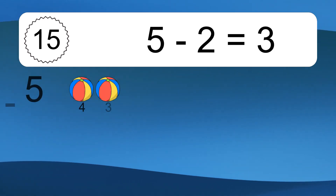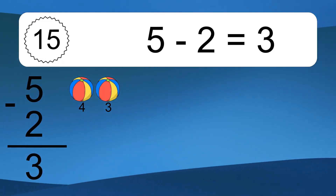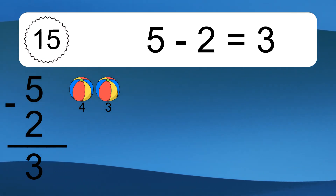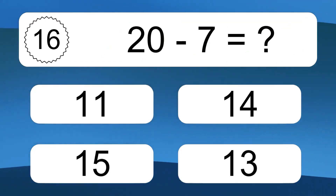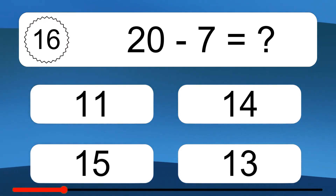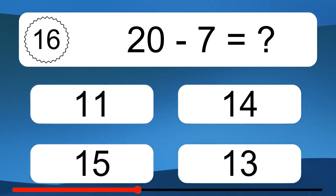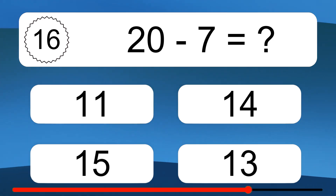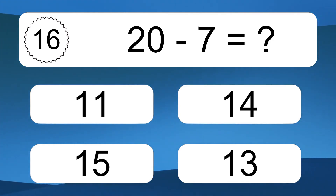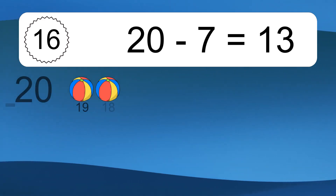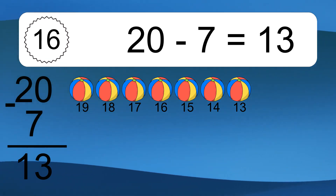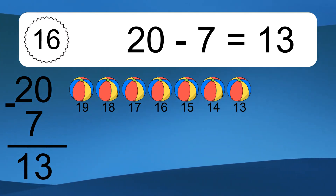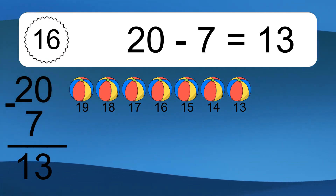5 minus 2 equals 3. Let's count it: 4, 3. 20 minus 7 equals what? 20 minus 7 equals 13. Let's count it: 19, 18, 17, 16, 15, 14, 13.